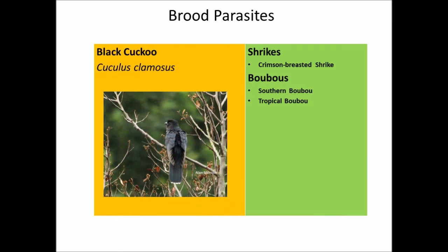With the Black Cuckoo, all its host species are from the genus Laniarius — the southern boubou, tropical boubou, and Laniarius atrococcineus, the crimson-breasted shrike.